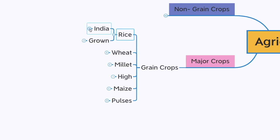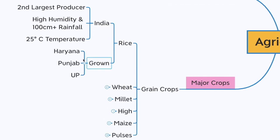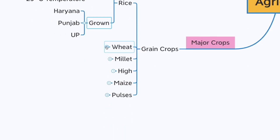First we have rice. India is the second largest producer of rice in the world. It requires high humidity, 100 centimeters or more of rainfall, and a temperature of 25 degrees centigrade. It is grown extensively in states such as Haryana, Punjab, and Uttar Pradesh.